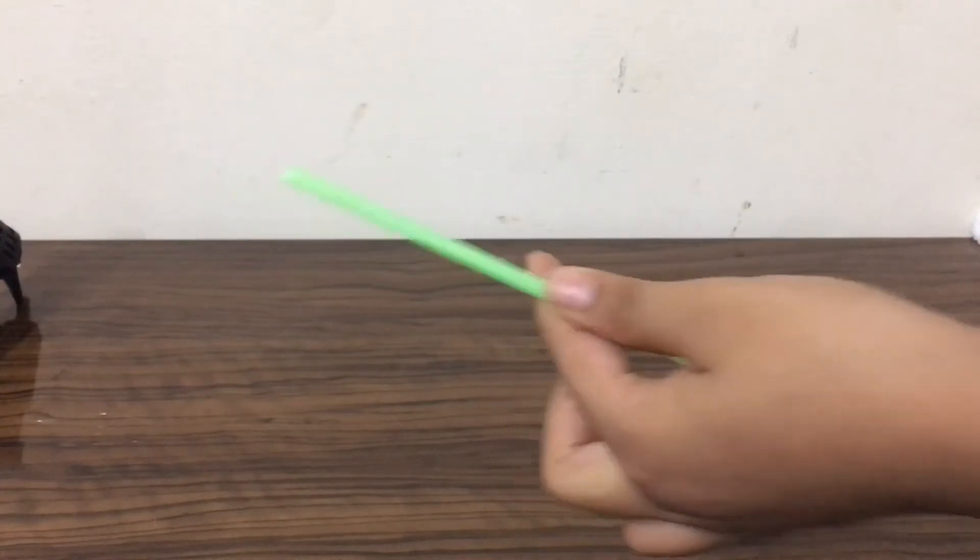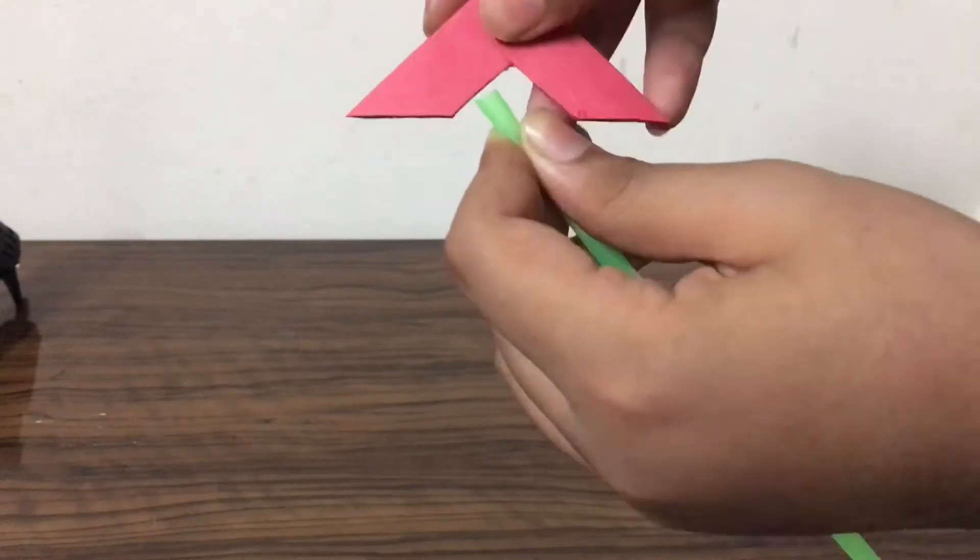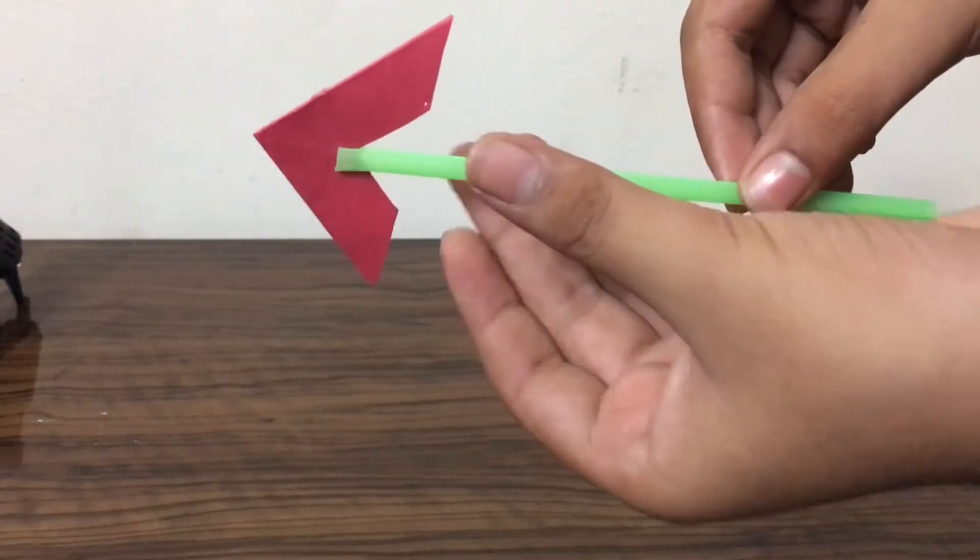Take a straw and slit it in half just at the very tip and insert the paper arrow into the notch that we have created in the straw and glue it in place.